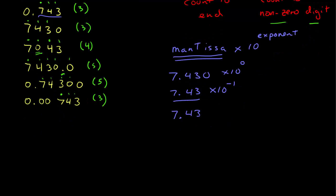7.43 times 10 to the 3. So here, this zero would not be part of the number, would not be part of the mantissa written in scientific notation. So the next one, I have 7.043 times 10 to the 3. I need all four numbers there.